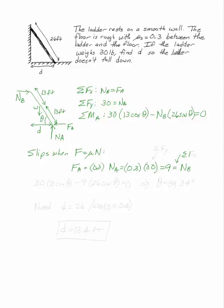Well, by the sum of the forces in x, this is Nb. I want to plug both of these things into the sum of the moments at a. So I have 30 times 13 cosine theta minus 9, that's Nb, times 26 sine theta equals 0. That happens when theta is 59.04 degrees.